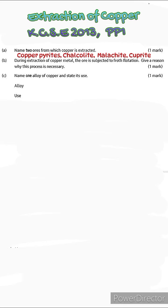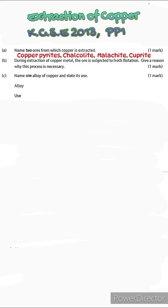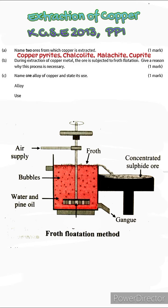Part B: During extraction of copper metal, the ore is subjected to froth flotation. Give a reason why the process is necessary. A lot of metal ores tend to have impurities — in the form of sand, soil, or other elements. Before copper metal can be extracted from its ores, the ore needs to first be concentrated, meaning impurities are reduced. In the case of copper, this is done through froth flotation. Please check out my video on extraction of copper for more details.